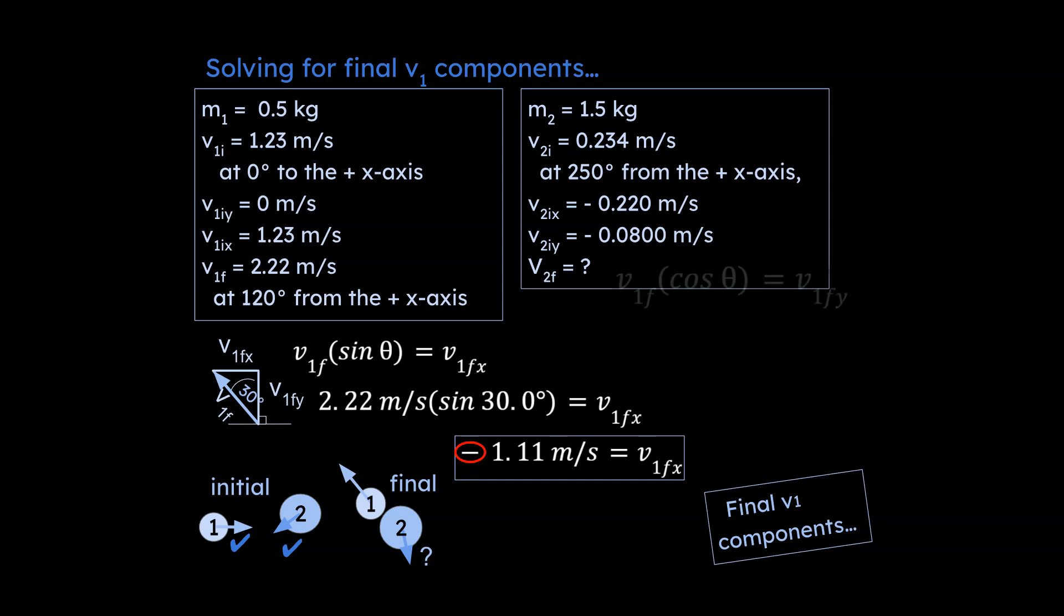Then we're going to work on v final in the y, v final for one in the y, and so we do some more component work here and we end up with this answer for v1 final in the y. Notice that should be positive because that component for one is moving upwards. I'm assuming up is positive and to the right is positive and to the left is negative and down is negative.